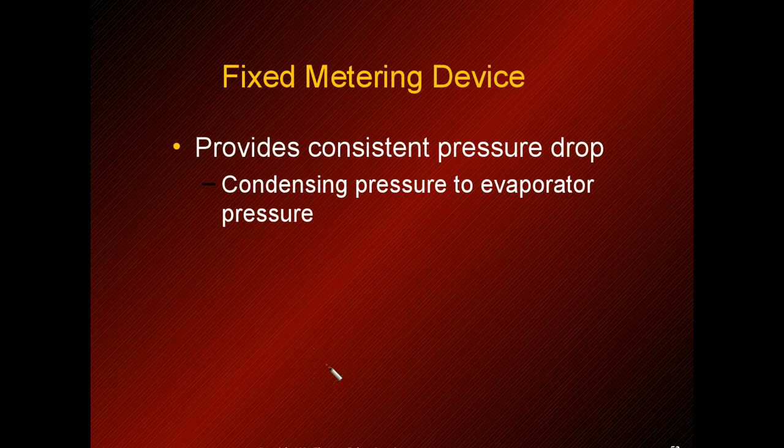The cap tube provides a consistent pressure drop. As the condensing pressure goes up, the evaporator pressure will go up, and vice versa — when the condensing pressure goes down, so will the evaporator pressure.